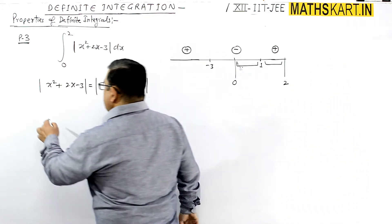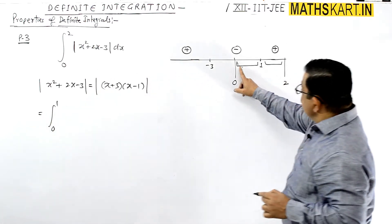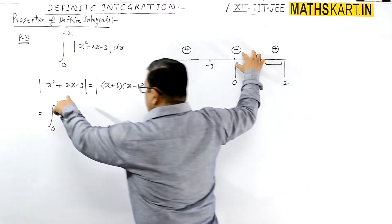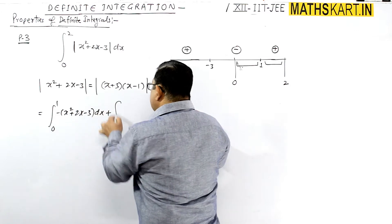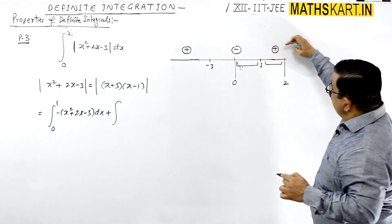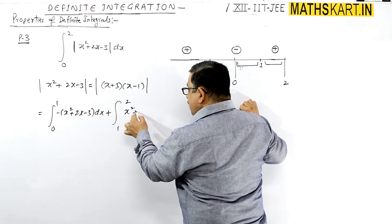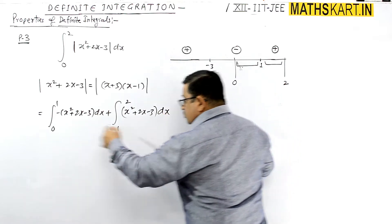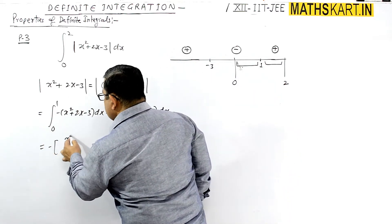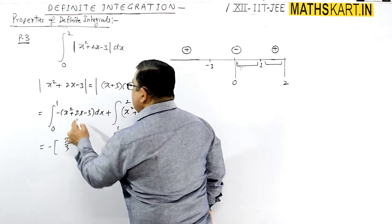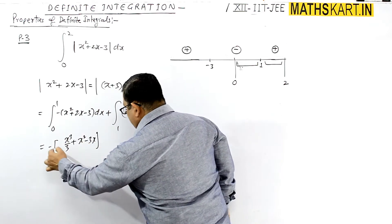So this curve is defined differently. We write the integral of -(x² + 2x - 3) dx from 0 to 1 plus the integral of (x² + 2x - 3) dx from 1 to 2. The antiderivative is x³/3 + 2x²/2 - 3x, with a minus sign on the first part.